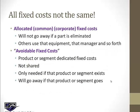To study whether we should keep or get rid of a product line, we have to separate the fixed costs into two kinds: the allocated, common, or corporate costs that won't go away if a part of the business is eliminated — because others are still using that equipment or facility — and the avoidable fixed costs that are specific and dedicated to just that one product or segment. If you get rid of that product, that avoidable fixed cost goes away.